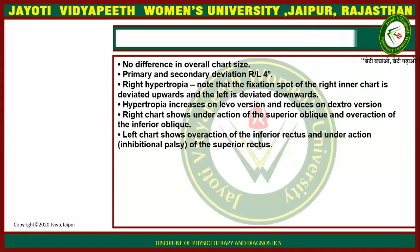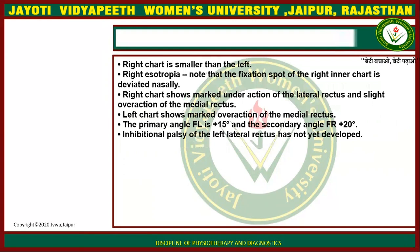In a case with no difference in overall chart size: primary and secondary deviation is right over left at 4 degrees — right hypertropia. Note the fixation spot of the right inner chart is deviated upward and the left is deviated downward. Hypertropia increases on levoversion and reduces on dextroversion. The right chart shows under-action of the superior oblique and over-action of the inferior oblique; the left chart shows over-action of the inferior rectus and under-action of the superior rectus.